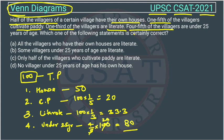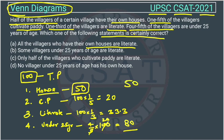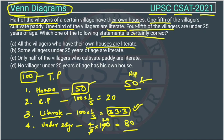So this is the information given. Now we have to find which statement is correct. Option A says all the villagers who have their own house are literate. Only 50 people have their own house, but only 33 people are literate. So we cannot say all 50 house owners are literate — there are only 33 literate people total. This statement is wrong.